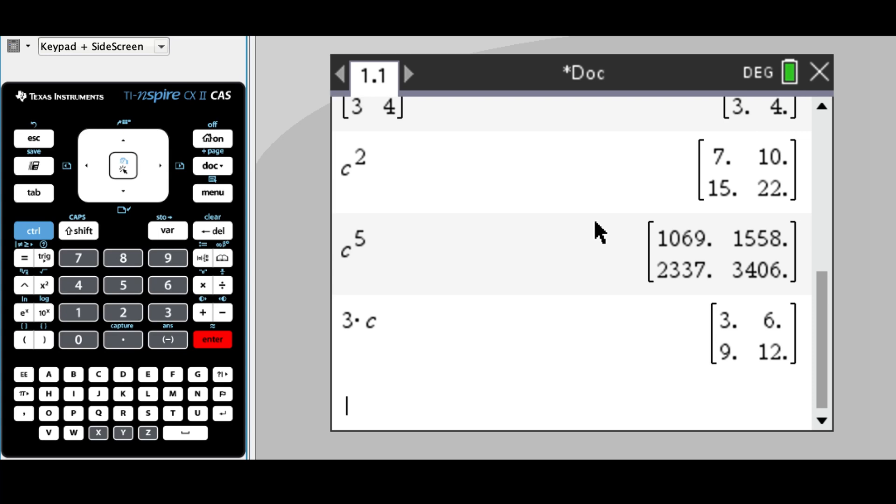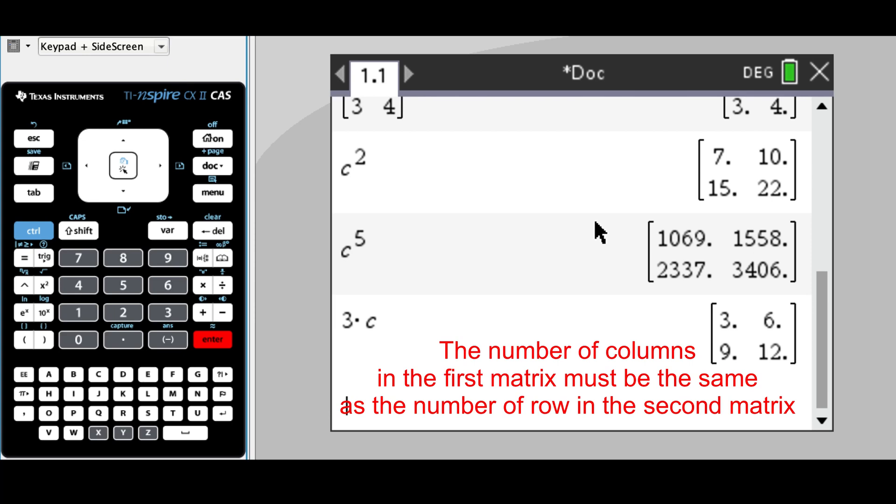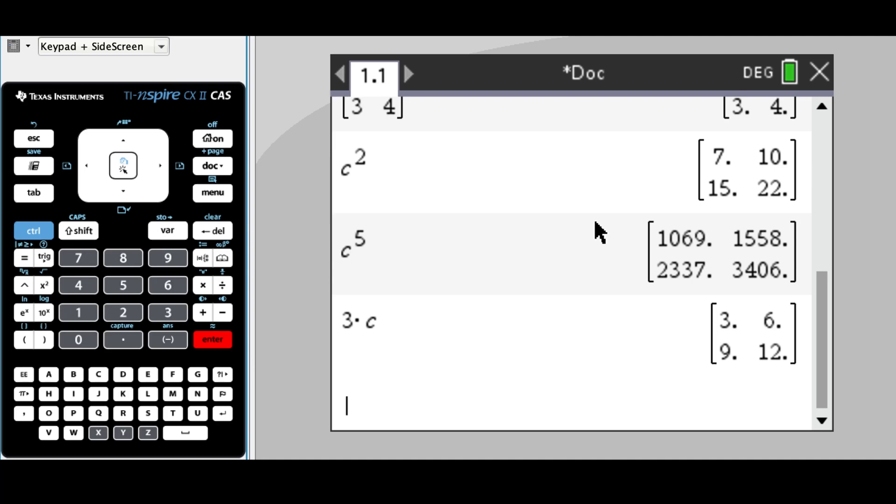On the CAS we can multiply matrices as well, but we need to make sure to check the order of both matrices—we'll talk about that in another video and another lesson—but we can multiply matrices as well.